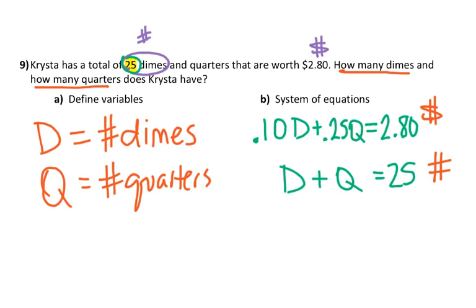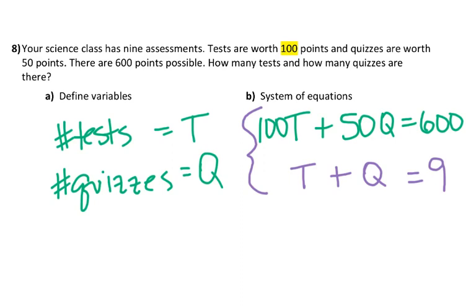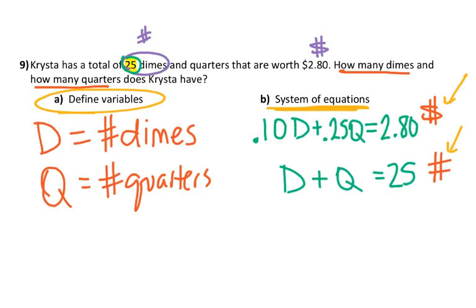Today we're not solving anything — we're just practicing writing the systems, and then we will solve them as we move forward. If you have any questions, please ask. Make sure you practice finding how to define your variables and writing a system of equations, thinking about the two types of things you're looking for: value and how many.